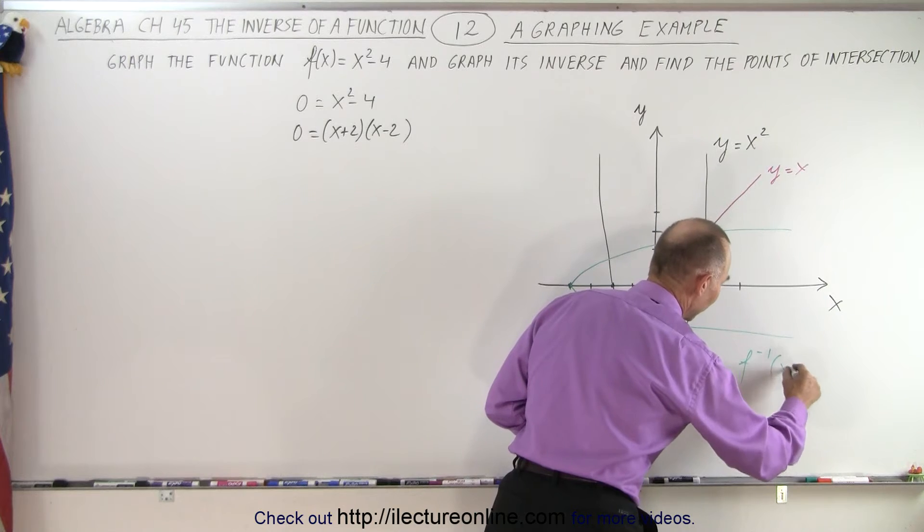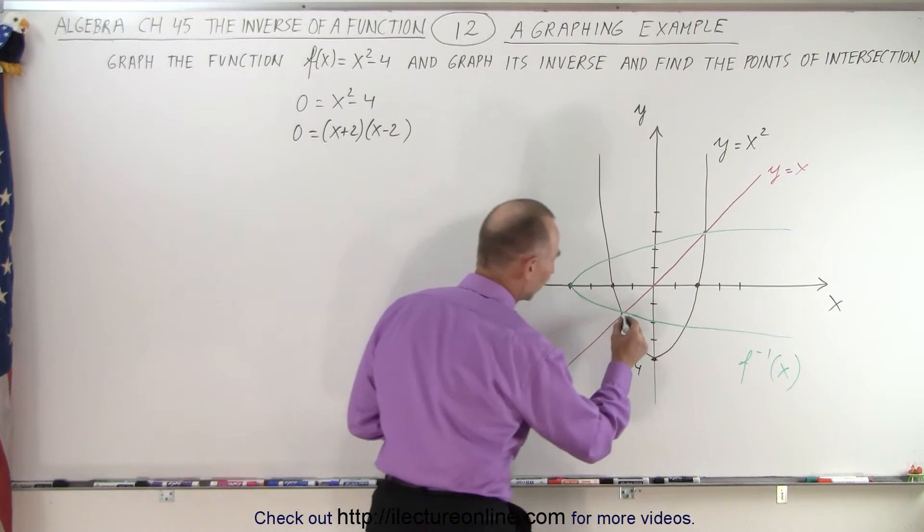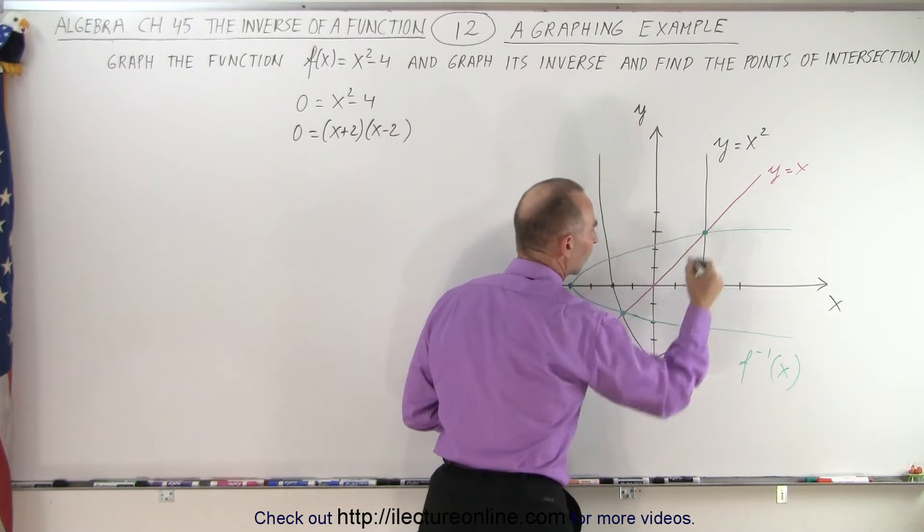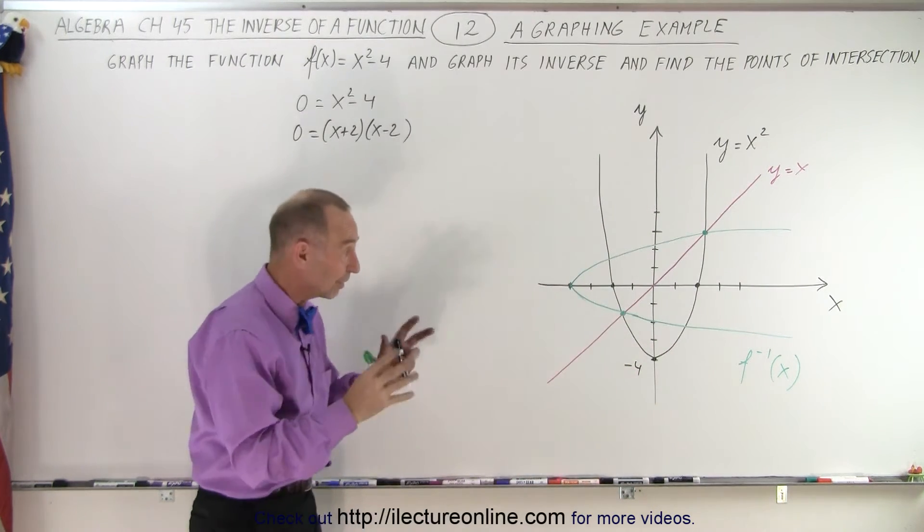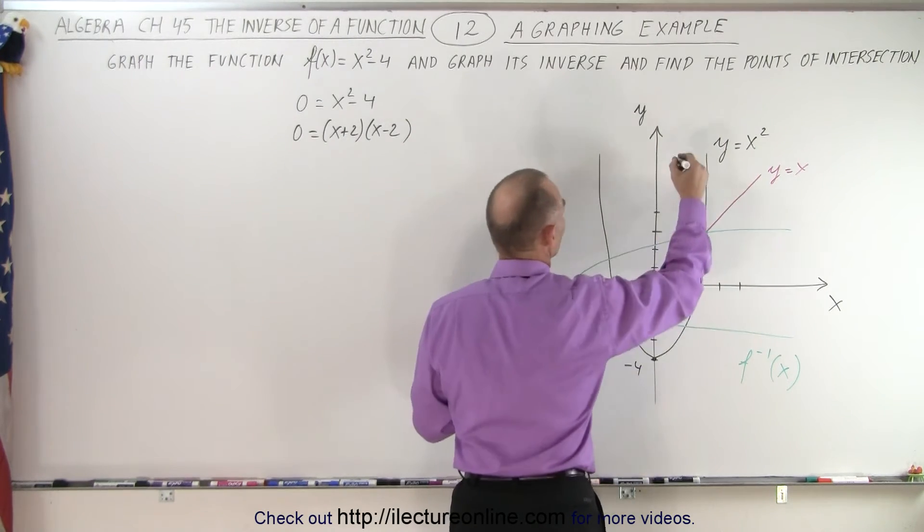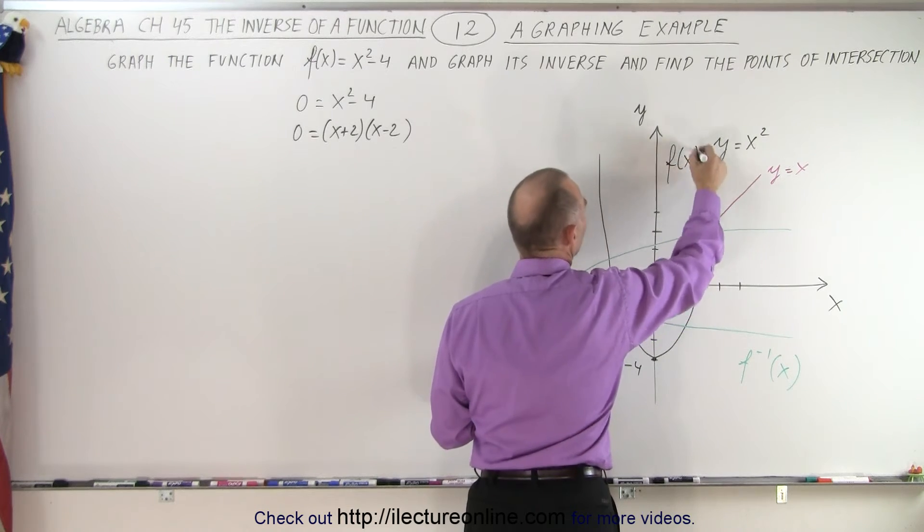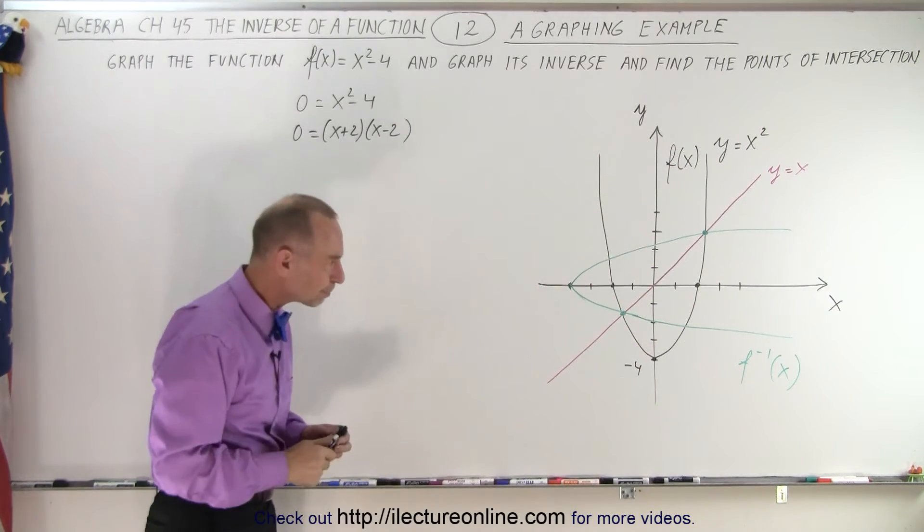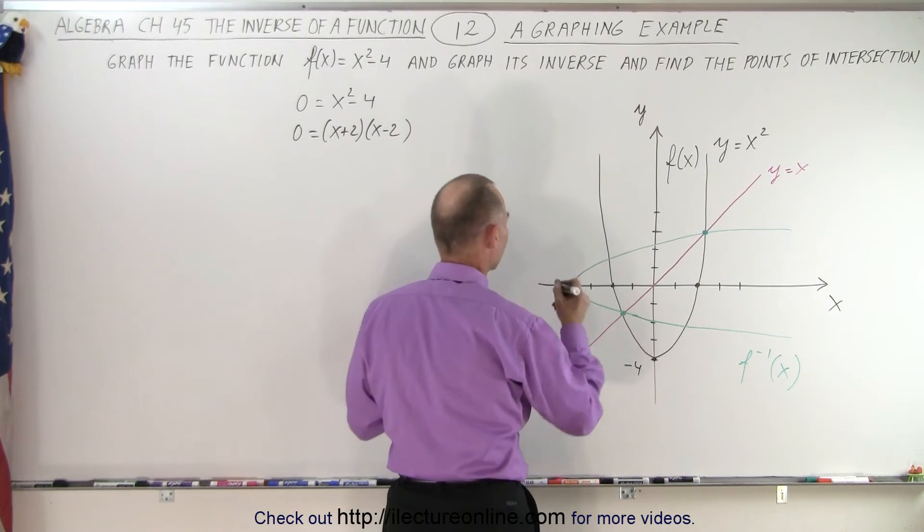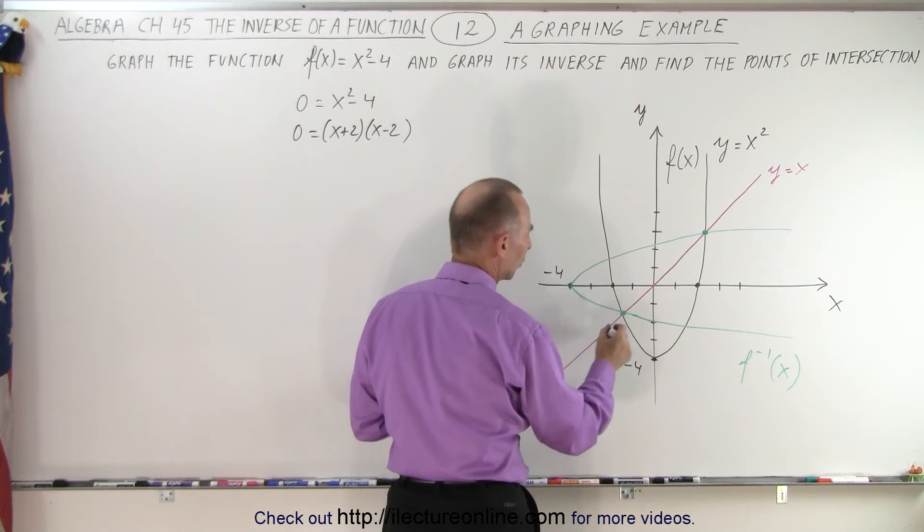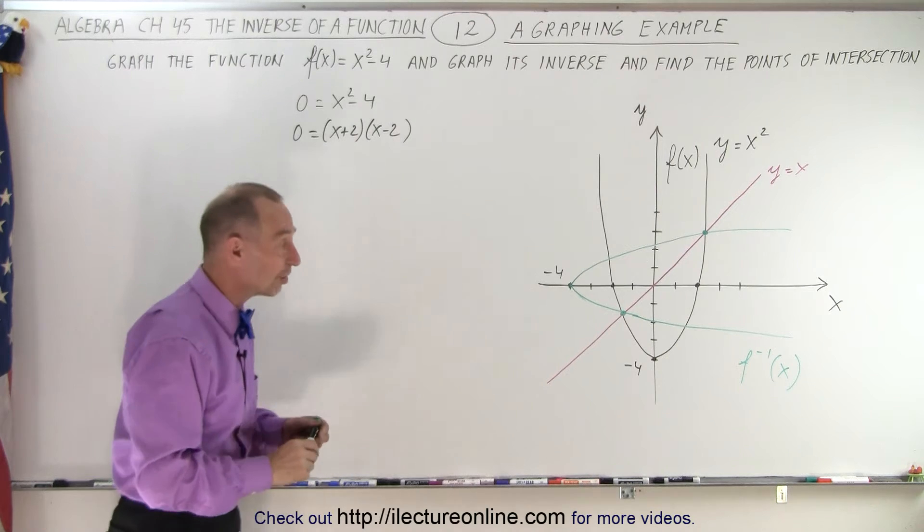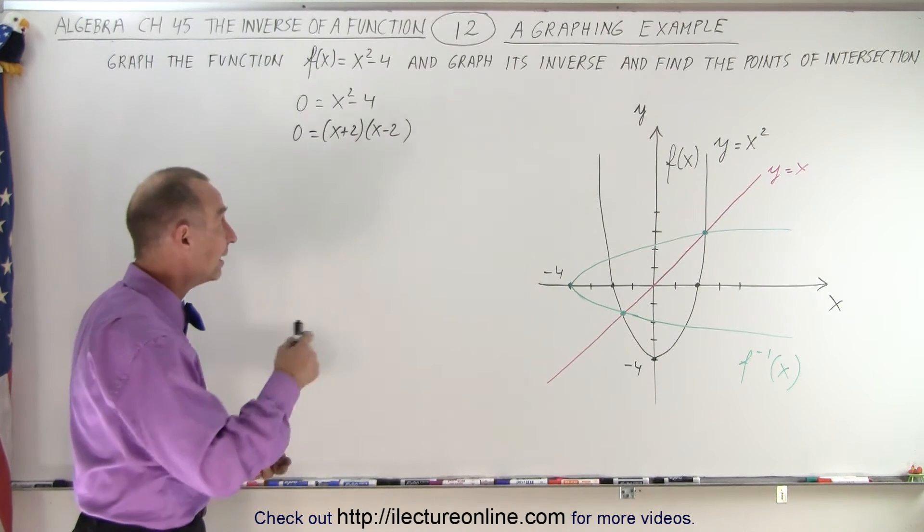The inverse of the function is the green line. So notice that it crosses the y equals x line at the same place where the function crosses it and over here as well. So that's how you know that you have a graph that is fairly representative. Here's the function f of x. So this is f of x. And then here we have the inverse of the function. And you know that the vertex here is at minus 4, which means the vertex here is at minus 4. So now the question is, what are these two points right there? What are the two points of intersection between the function and the inverse of the function?